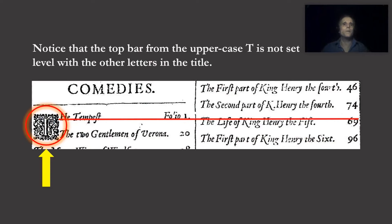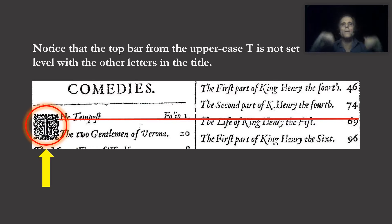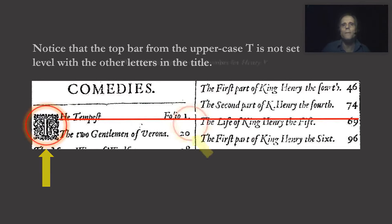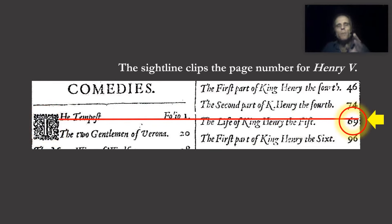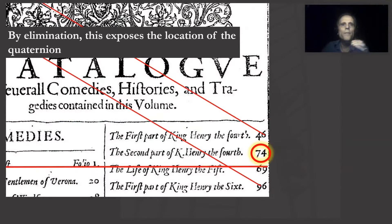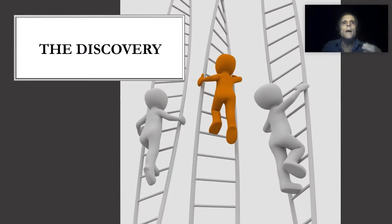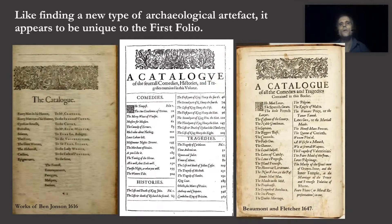I chose the decorative initial for the following reason: notice that the top bar from the letter is not set level with the tops of the other letters in the title; also, it is set level to the bottom of the line of text, drawing attention to itself. The sight line clips the page number for Henry V, and by elimination this exposes the location of the Quaternion. Now I will show you the discovery I made from the catalogue of plays which contributes to the authorship issue. The sight lines are crucial. Like finding a new type of archaeological artifact, it appears to be unique to the first folio. The catalogue pages for Johnson's works from 1616 and Beaumont and Fletcher's folio from 1647 do not separate the plays into categories, nor do they have page numbers.